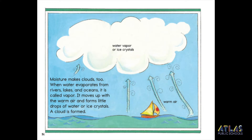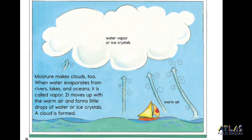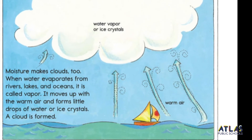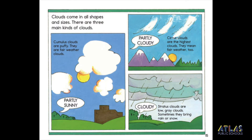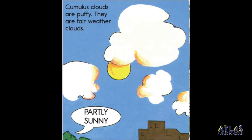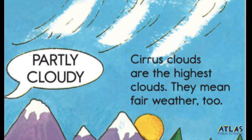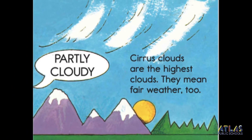Moisture makes clouds too. When water evaporates from rivers, lakes, and oceans, it is called vapor. It moves up with the warm air and forms little drops of water or ice crystals. A cloud is formed. Clouds come in all shapes and sizes. There are three main kinds of clouds. Cumulus clouds are puffy — they are fair weather clouds. Cirrus clouds are the highest clouds. They mean fair weather too.